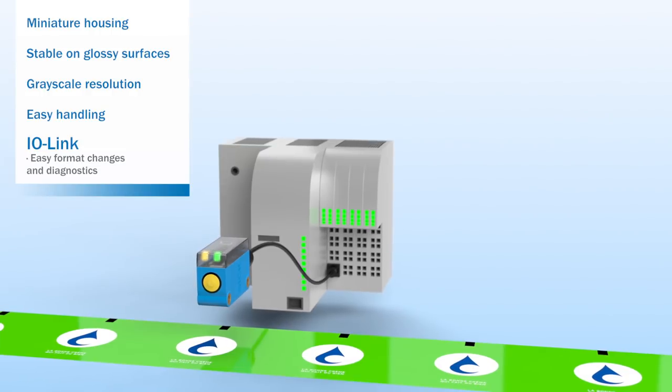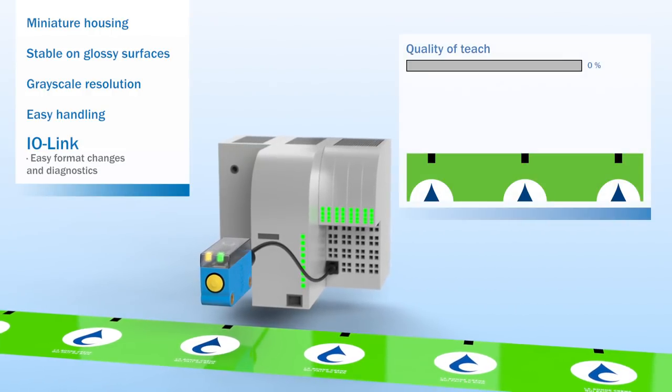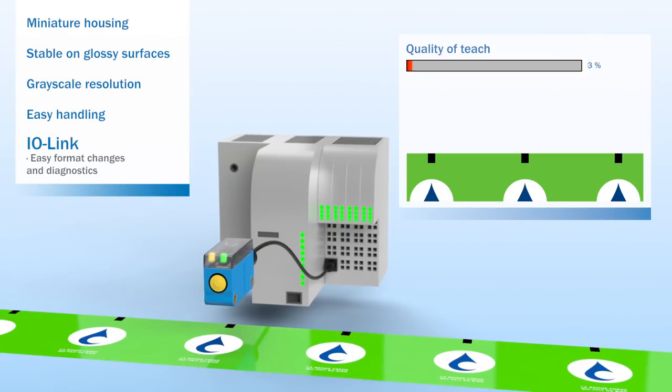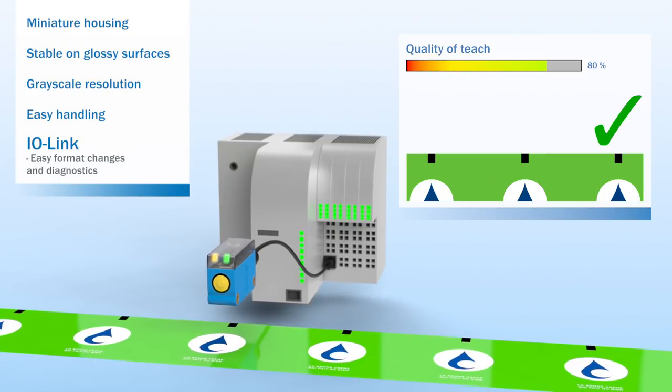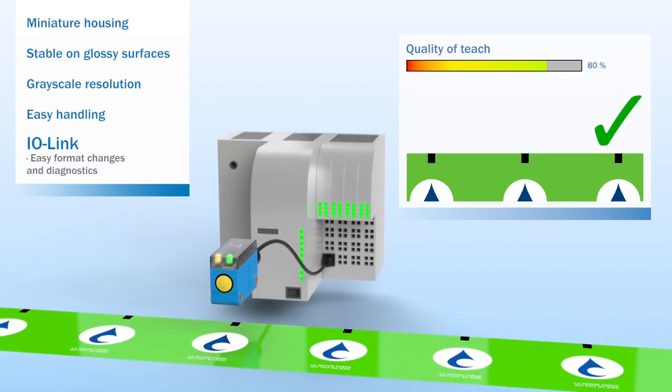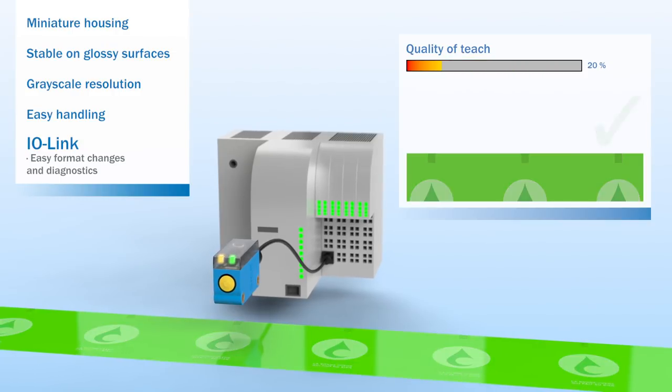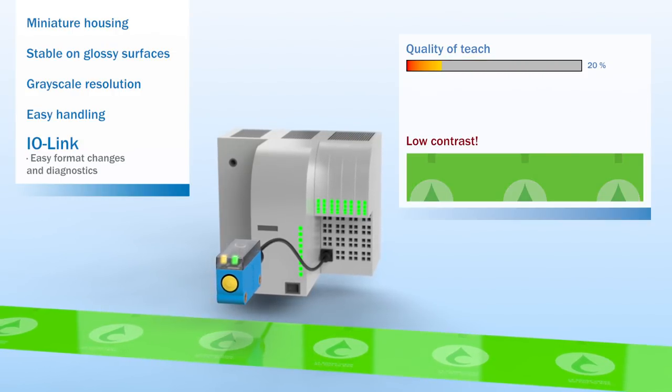The sensor's Quality of Teach property returns a value that is indicative of process reliability. If the value falls below a certain level, a safety message can be output via the control system, for example.